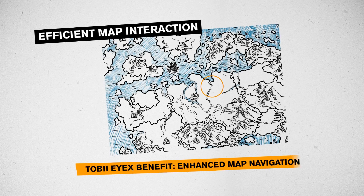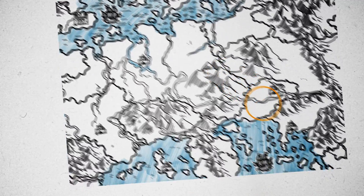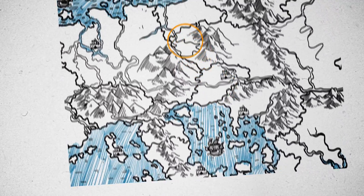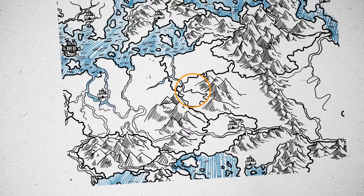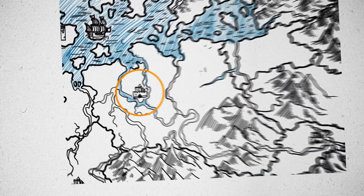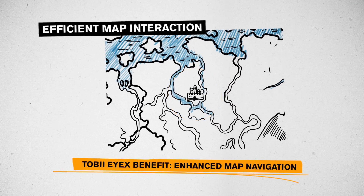Efficient Map Interaction: Move from one part of the map to another at a glance. The gaze will also take you to the right spot when zooming from overview to the ground.